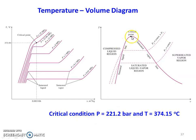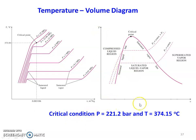The critical condition: the pressure here is 221.2 bar and the temperature is 374.15°C. At the critical point, it is difficult to distinguish between vapor and liquid — liquid and vapor cannot be distinguished. Therefore, the latent heat of evaporation equals zero at the critical point. This is very important to remember in the diagram.